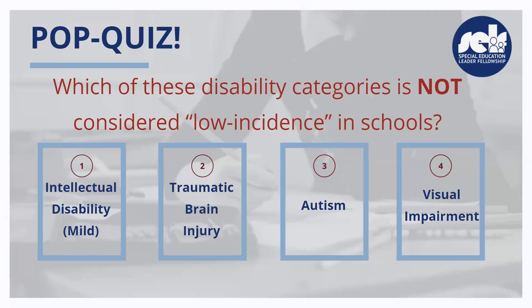So before we dive right into our content we're going to start with a little pop quiz. Which of these disability categories is not considered low incidence in schools? Intellectual disability mild, traumatic brain injury, autism, or visual impairment. If you're watching this webinar go ahead and just think of your answer in your head and hold it there, and we will give just another second.